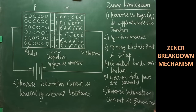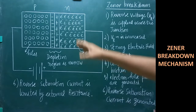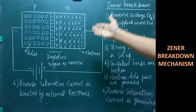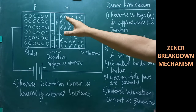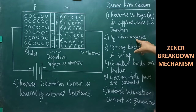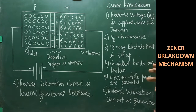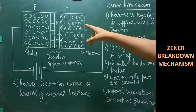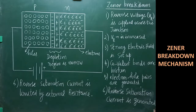Now we are going to see what is Zener breakdown — a very important term. The Zener diode works only in reverse biased condition. When the reverse voltage Vr is slowly increased, a strong electric field is set up across the junction. The electric lines of force move from positive to negative. Due to this strong electric field, the covalent bonds in the lattice will be broken — this is called rupture of covalent bonds.